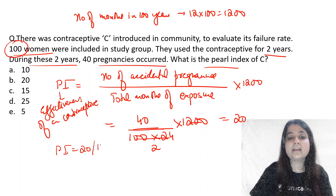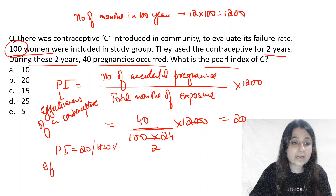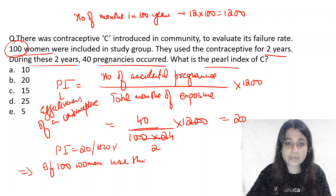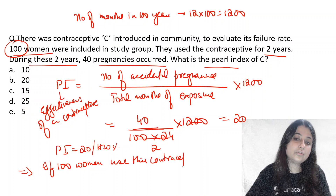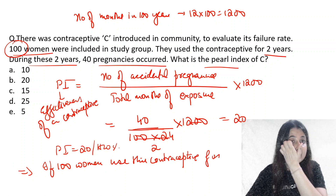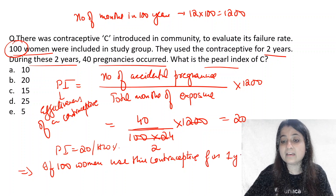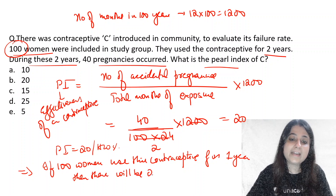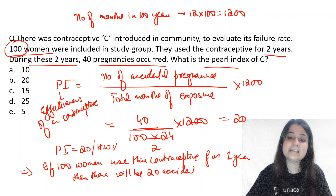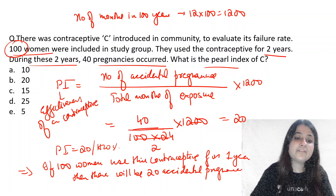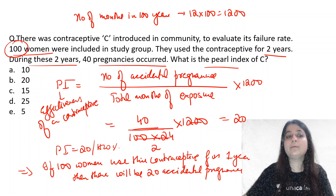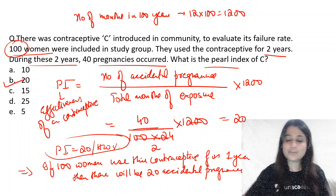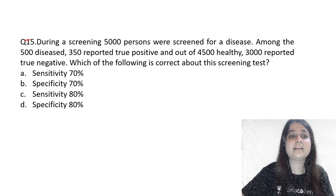Pearl index of 20 per 100 women-years means that if 100 women use this particular contraceptive C for 1 year, there will be 20 accidental pregnancies. That is the interpretation. Now let's look at another important numerical — question 5.